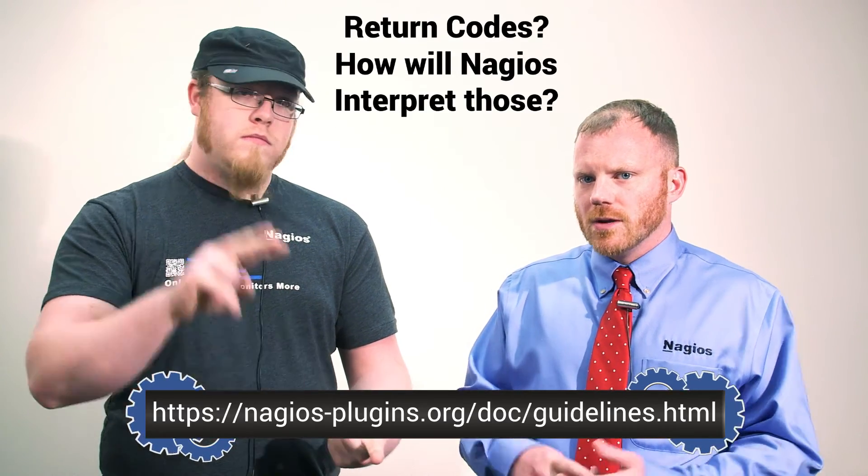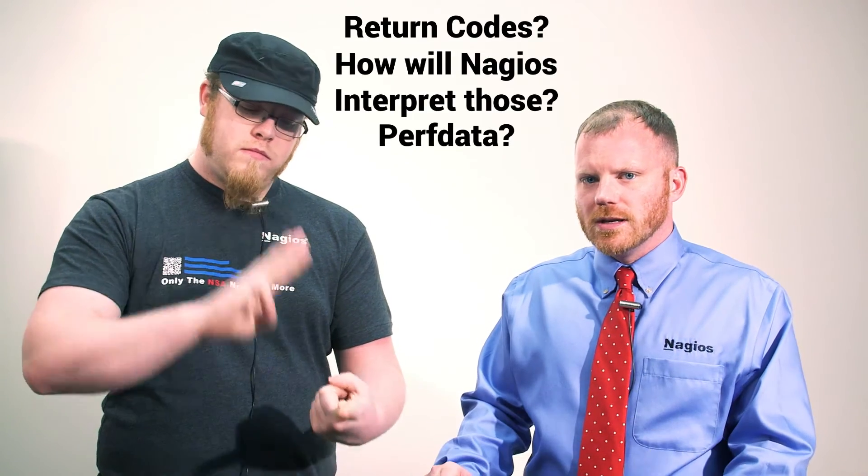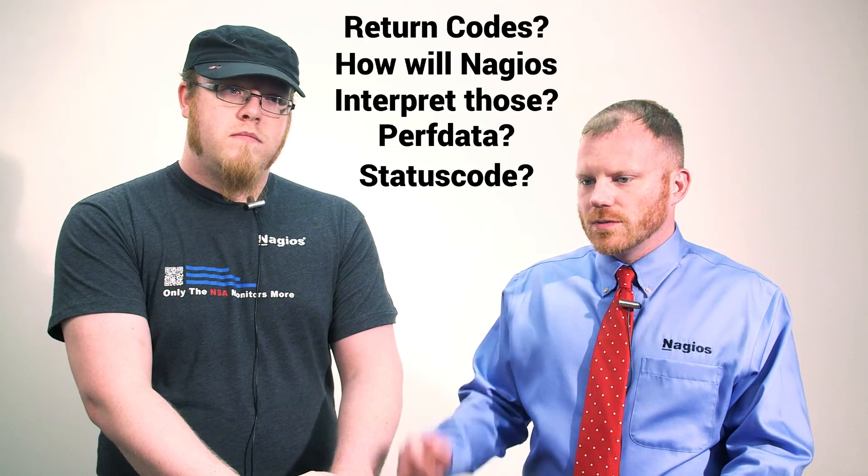Speaking of it being easy, we actually have a plug-in development guide available at this URL that'll be right here. And that includes the things that you need to know, such as what are your return codes and how is Nagios going to interpret those? What's your perf data need to be? What does your status codes need to return? Yeah, it's not a lot. I mean, literally 10 lines of Bash and you can have a simple plug-in.